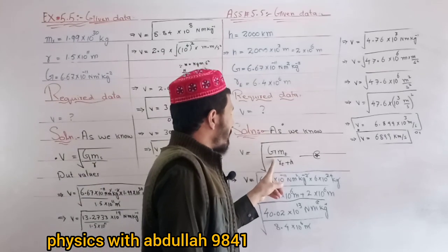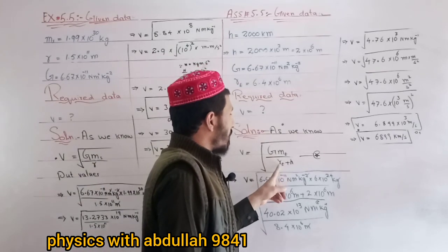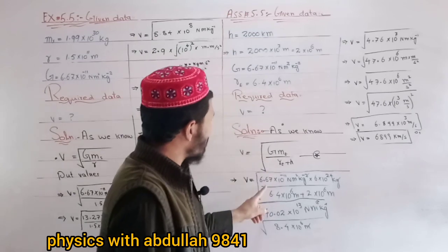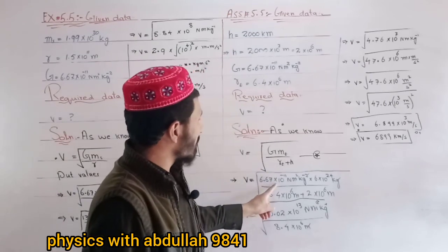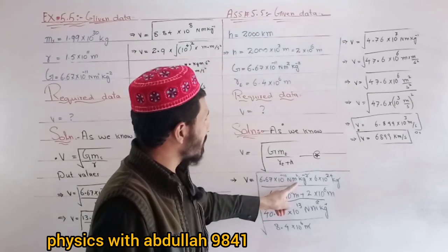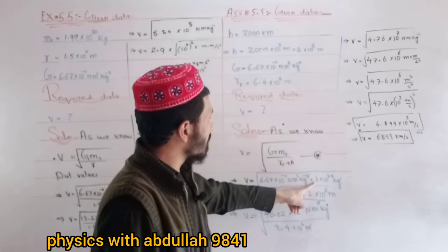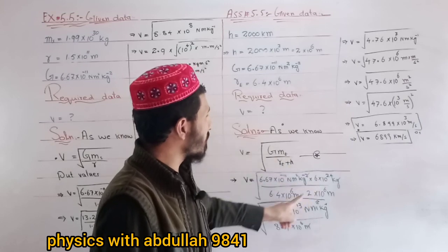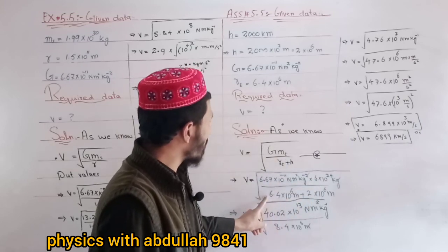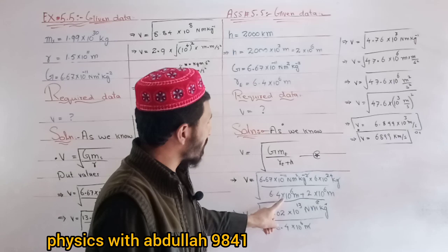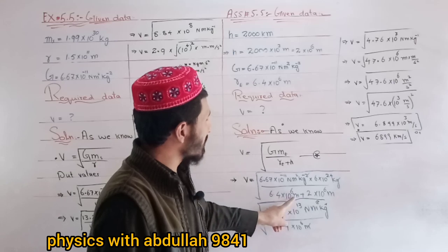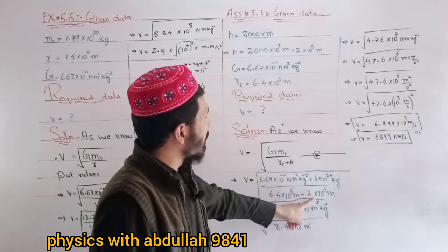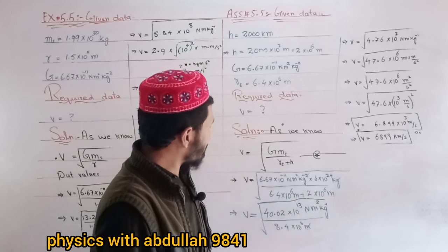Using the formula v = √(GM_e / (R_e + h)), where G = 6.67 × 10^-11 N·m²/kg², mass of Earth = 6 × 10^24 kg, radius of Earth R_e = 6.4 × 10^6 m, and height h = 2 × 10^6 m.